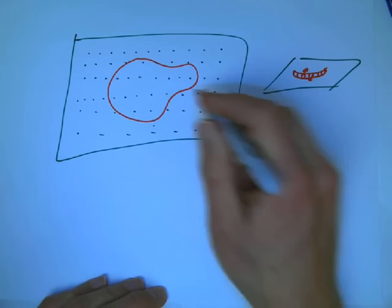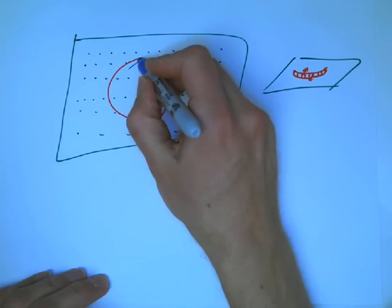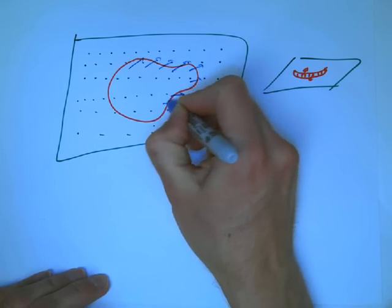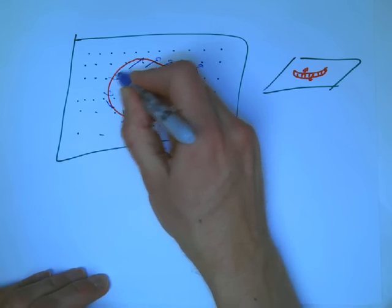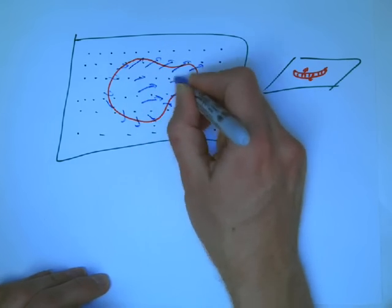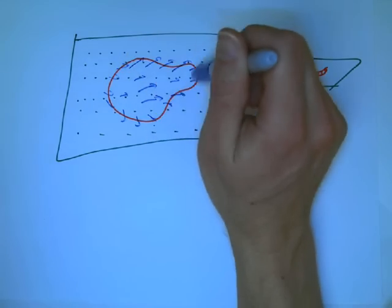And we want to know, suppose the fluid is flowing like this maybe. Suppose this is the flow of the fluid, this vector field. I'd like to know, in total, how much is flowing across this net.